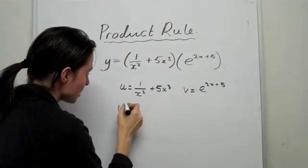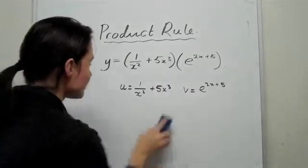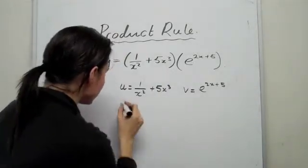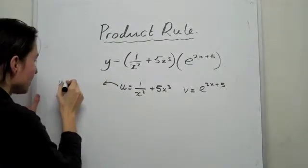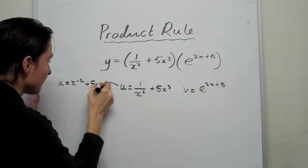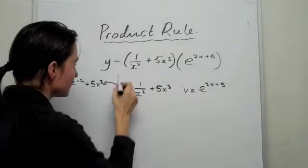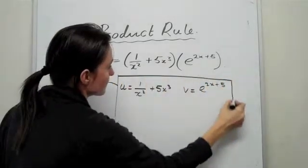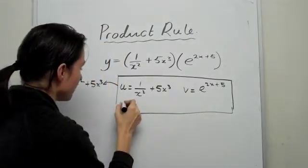All right, and then we make U dash. Well, before we find U dash, just on the side piece of paper, I always like to just make sure that this is beautified. So I'm going to go U equal to X to the minus 2 plus 5X cubed. Just so I can differentiate it easily. And I can still, without making a big mess in my information box, I can put all my info in.